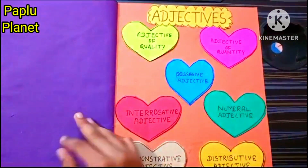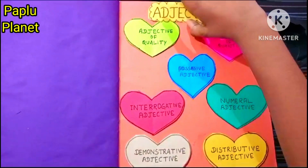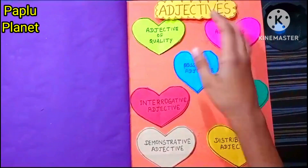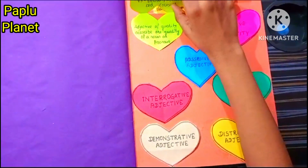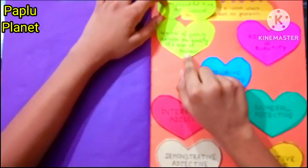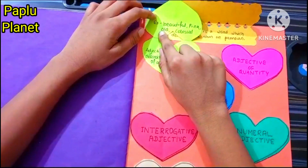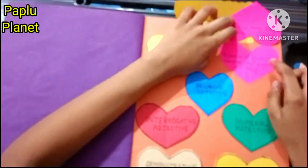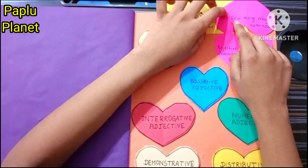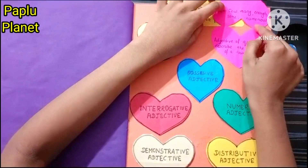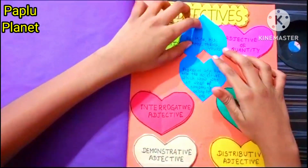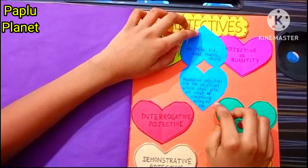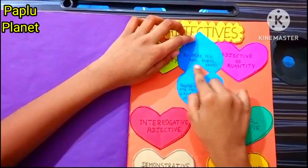Now let's go to my other project: adjectives. An adjective is a word which describes a noun or pronoun. Types of adjectives. Adjective of quality: describes the quality of a noun or pronoun. Example: beautiful, pink, old and colossal. Adjective of quantity: describes the quantity of a thing. Example: few, many, enough, some and numerous. Possessive adjectives: show who or what something belongs to. Example: mine, his, hers, theirs and yours.